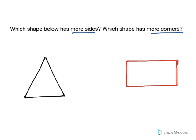First thing we need to know is what a side is and what a corner is. Let's start with a side. A side is just one length that runs in between two of the corners.